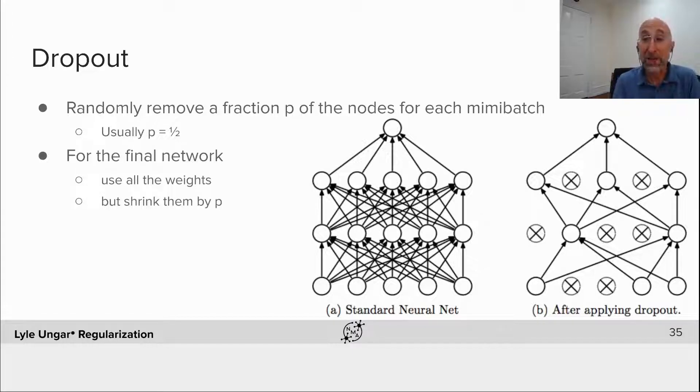At the end of the day, we put back in the last set of nodes that we had deleted, so we now have the full network. Every node now is getting twice as many inputs as it was getting during training when half of them were deleted. So we're going to shrink the input, divide it by a half, shrink them by p, to compensate for the fact that at the end we put in twice as many inputs as we had during training.